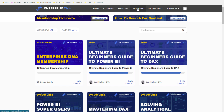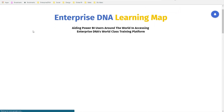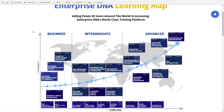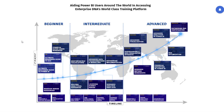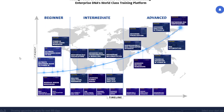One thing I'd recommend looking at is the Learning Map, accessible from the menu bar. This is our guide around how to work through our course material and resources. Depending on your skill set — whether you're a beginner, intermediate, or advanced user — we have a recommended order to work through. You don't have to follow it exactly, but for those coming onto the platform wondering where to start, this is our recommendation.